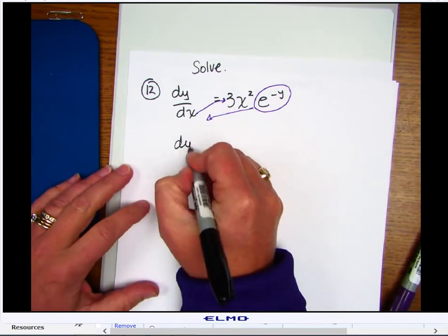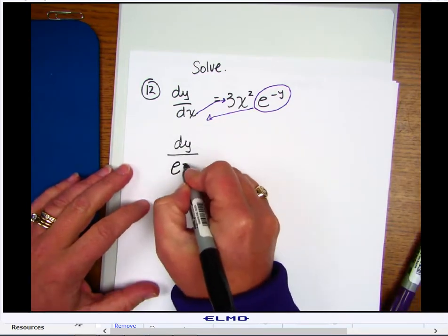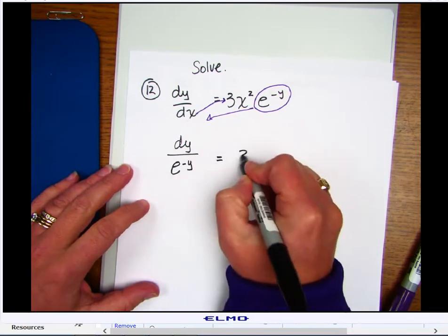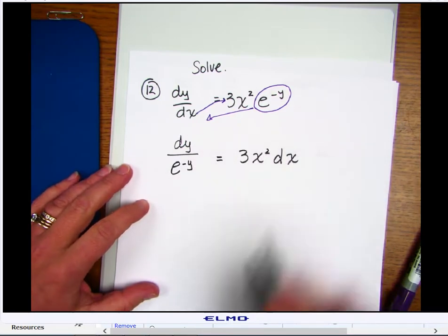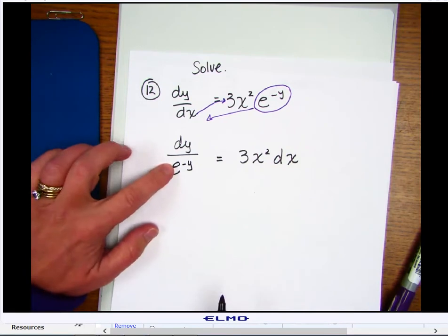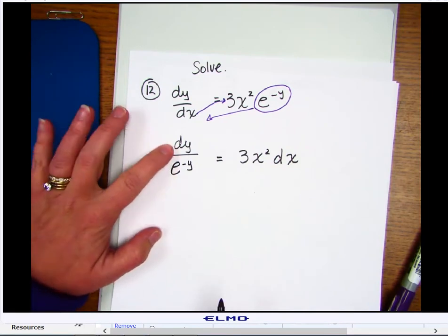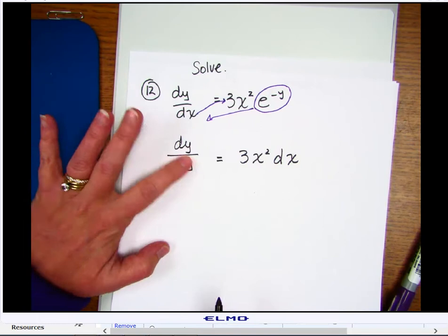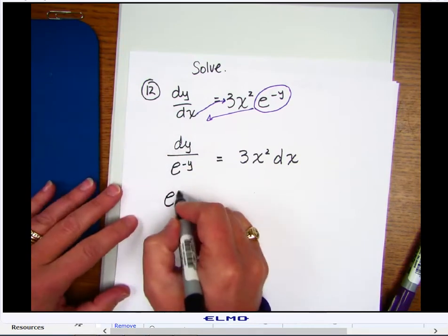So that would give me over here dy over e to the minus y, and over here 3x squared dx. And now I'm just going to simplify this by bringing it out of the denominator, moving it to the numerator, and that's just going to change the sign on my exponent.